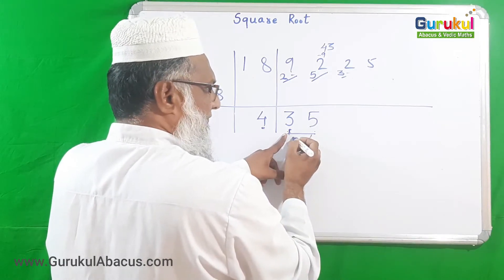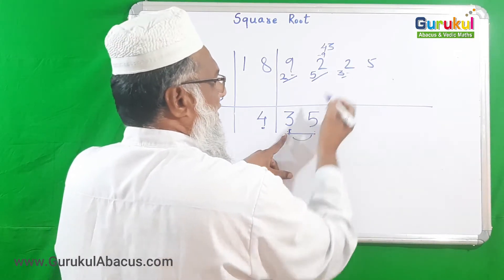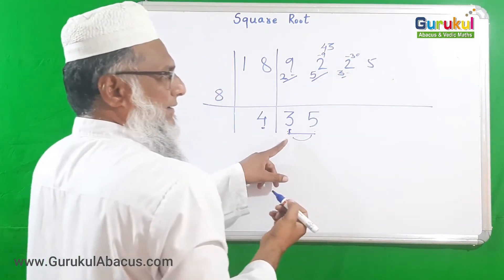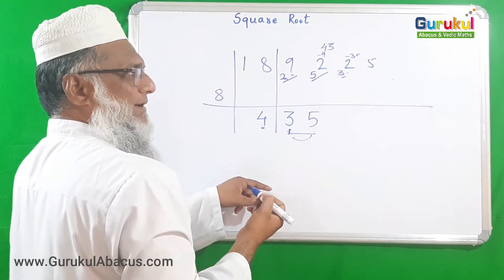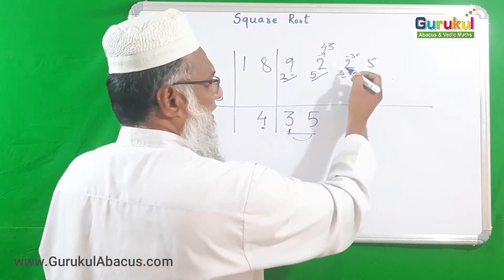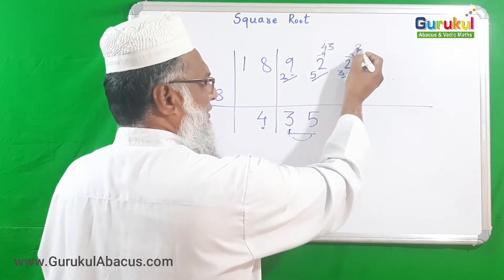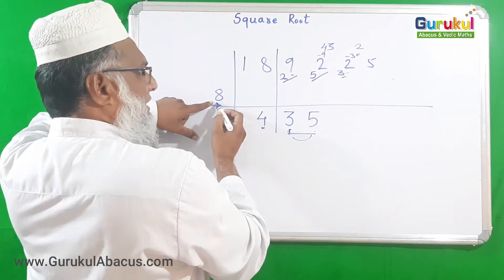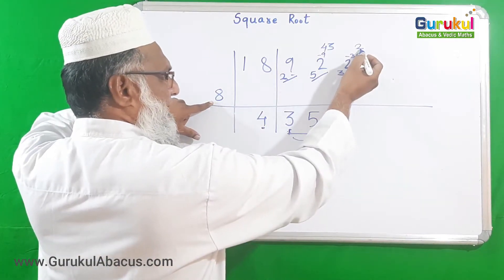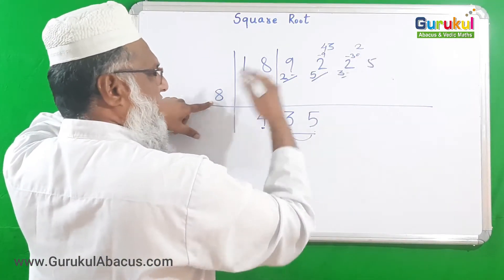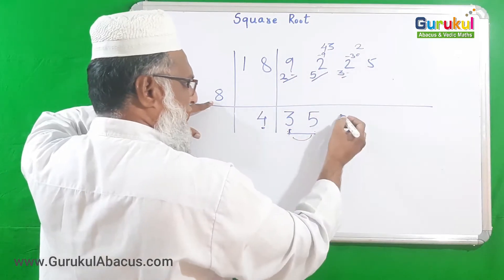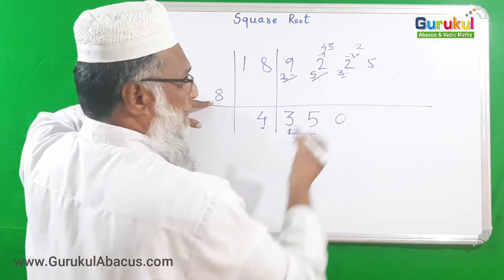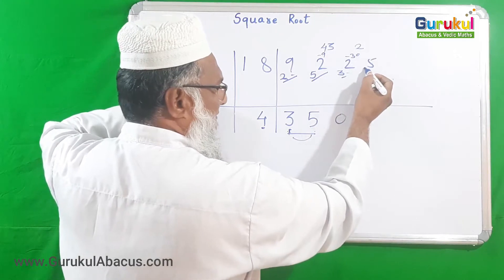For the dvandva of 35: 3 × 5 doubled is 30. Subtracting 30 from 35 leaves 2. Now the divisor is 8, and 2 is too small, so we say 8 × 0 = 0, keeping the remainder 2 and carrying it forward.